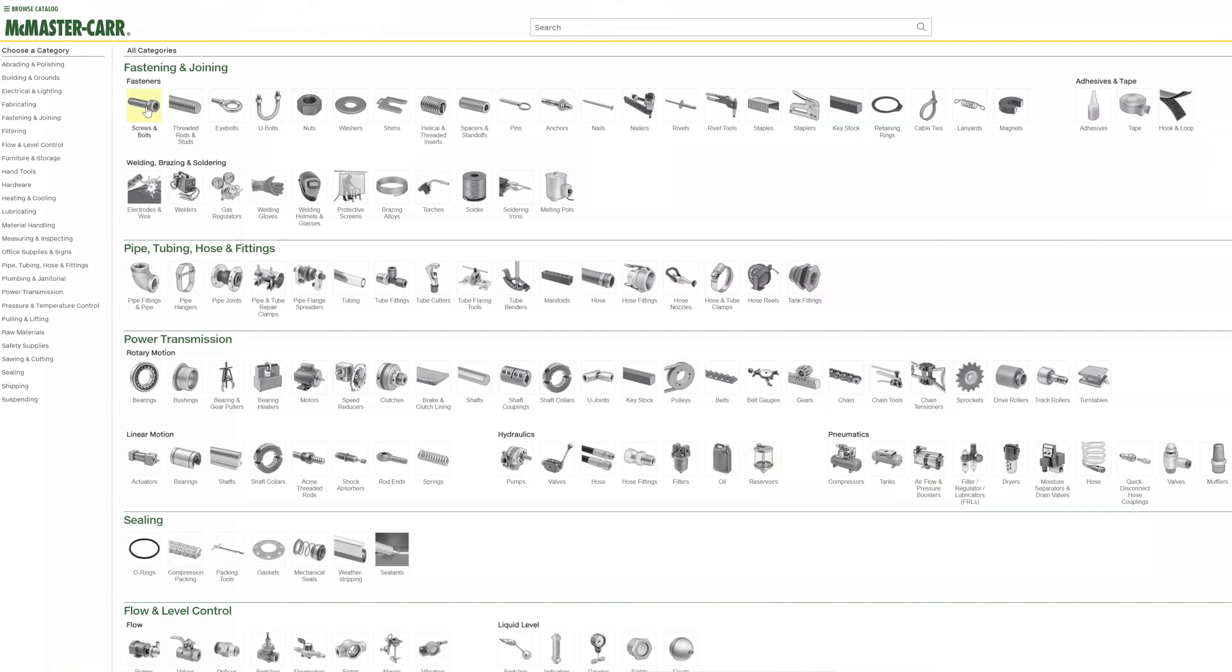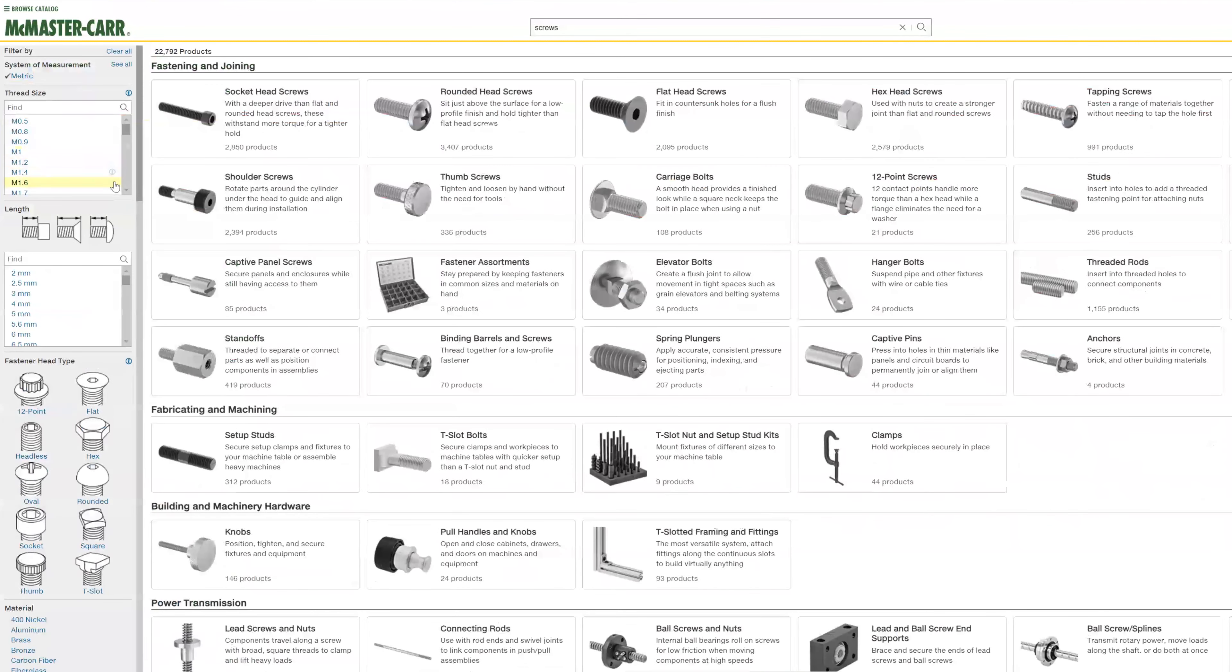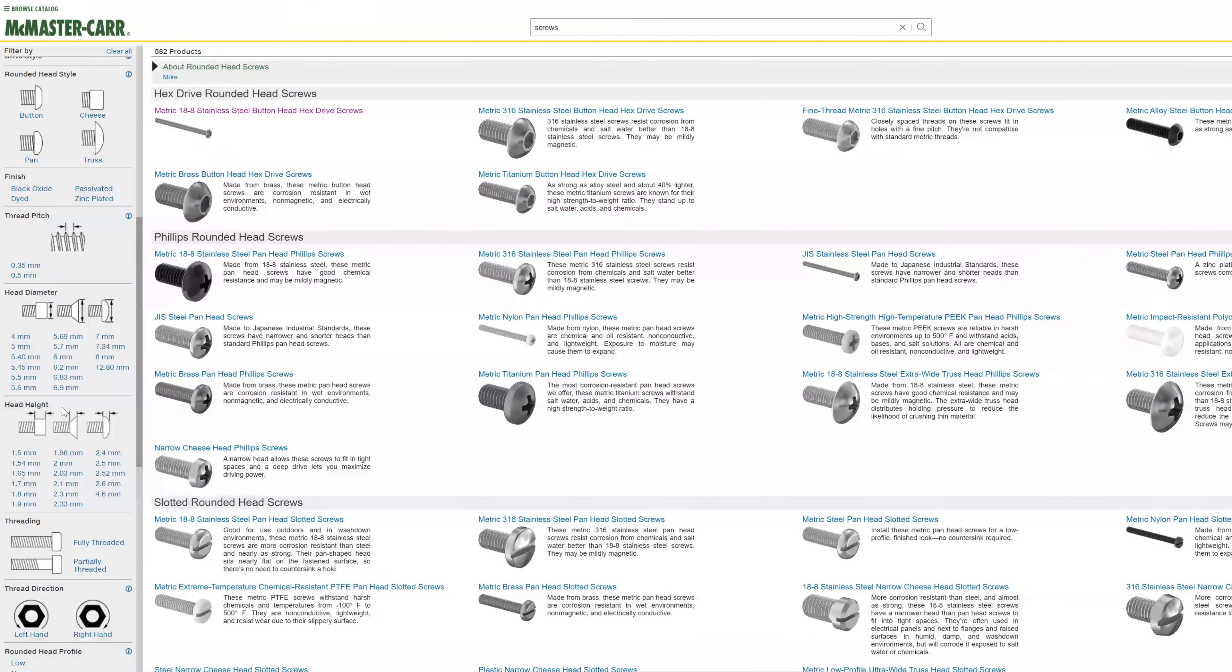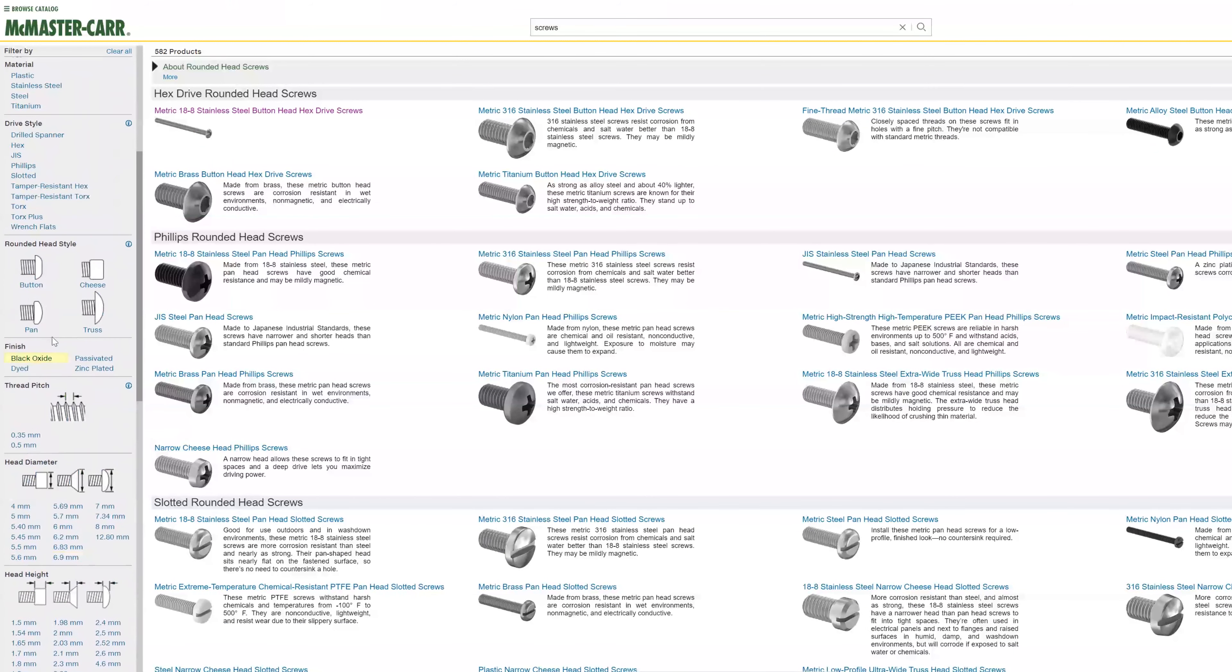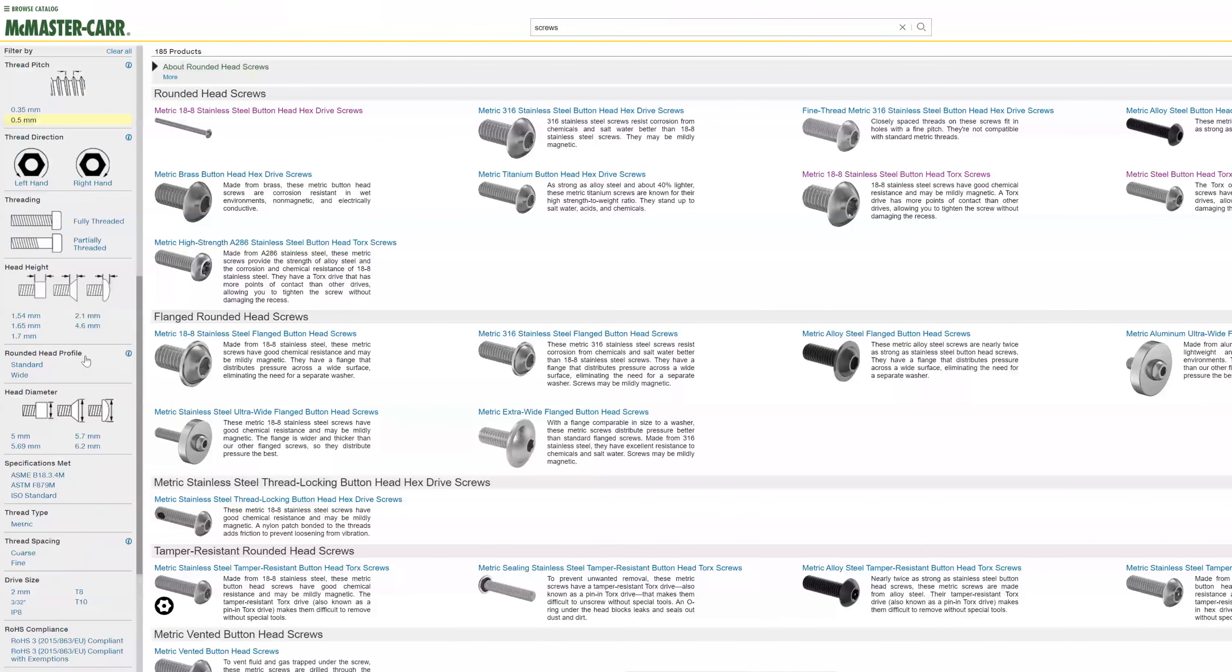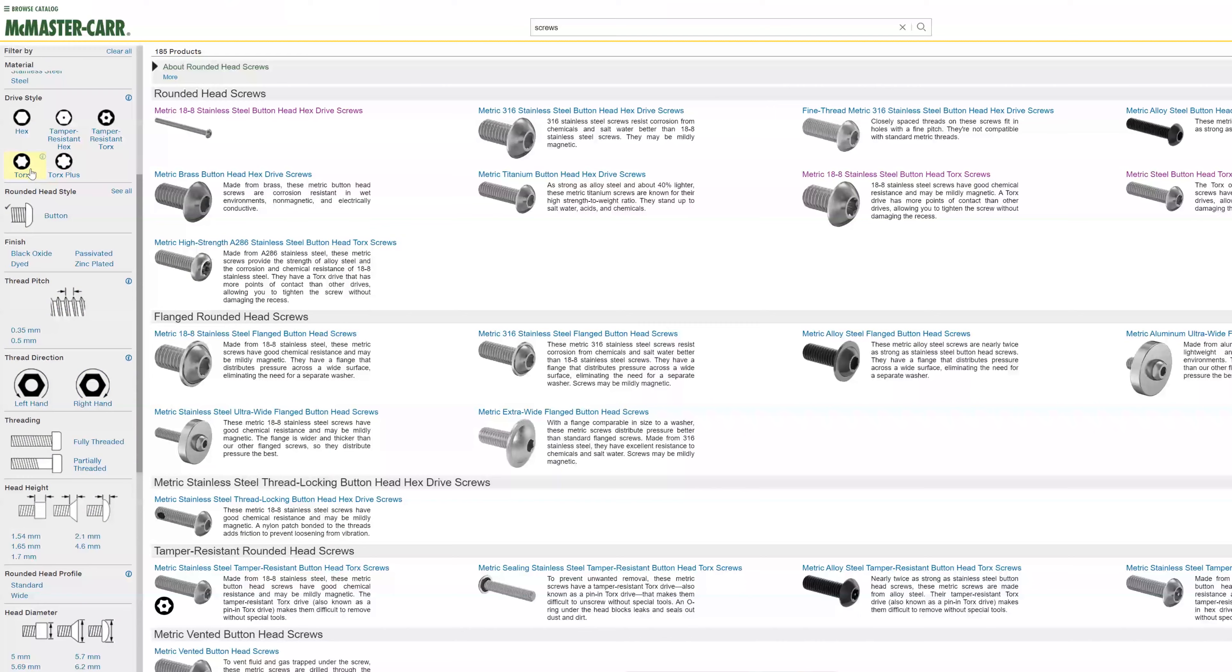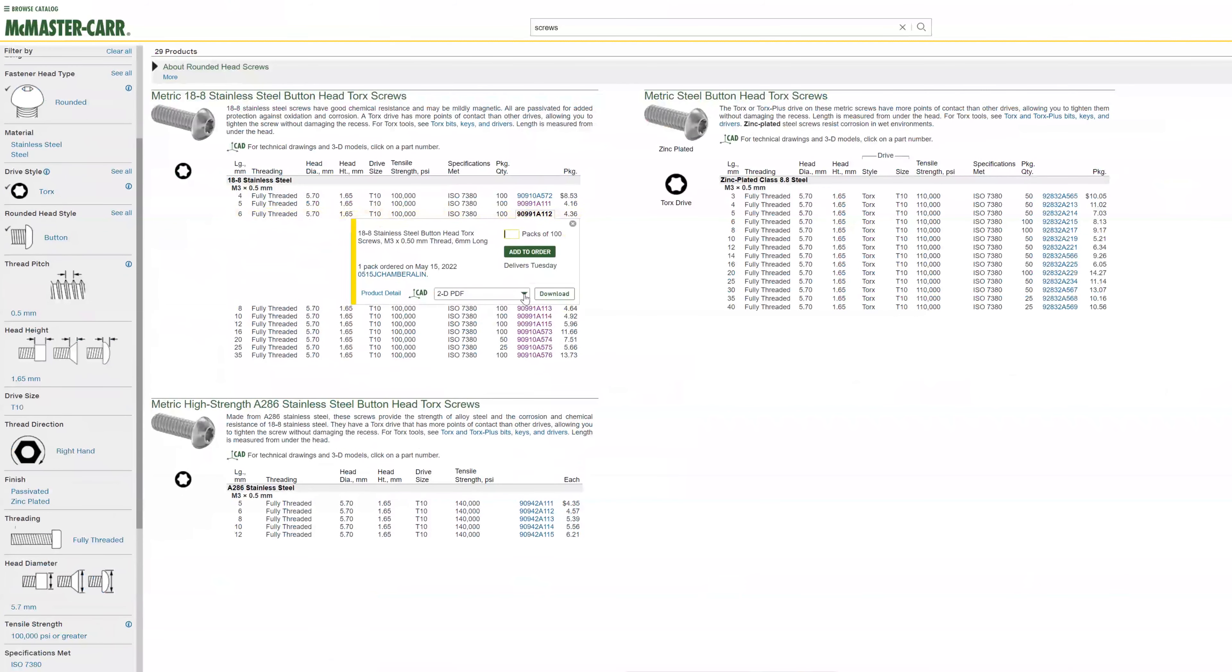This McMaster Carr site is one of the best organized I've ever seen. You can sort it by fasteners, metric, go down to the size that you need, three millimeter, and then sort by head size. What I do is I always like to use Torx heads. They don't strip. And then it'll give you a huge selection of all the different Torx fasteners that are available. You can even download 2D drawings or 3D CAD if you're building your vehicle in CAD.